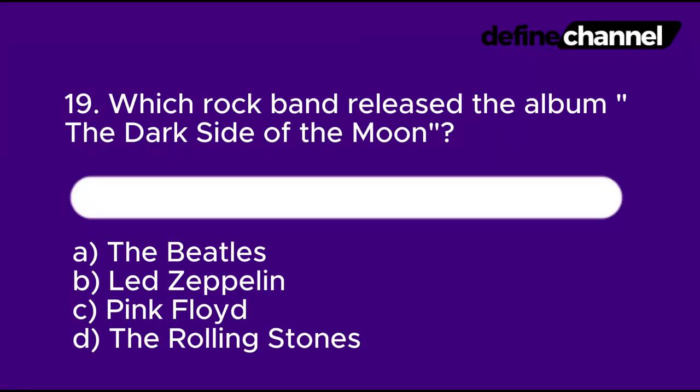Question 19: Which rock band released the album The Dark Side of the Moon? A. The Beatles. B. Led Zeppelin. C. Pink Floyd. D. The Rolling Stones. In 10 seconds, which do you think is the correct answer?